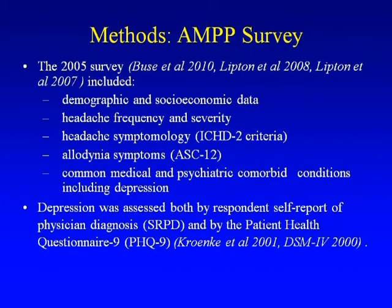The questionnaire is extensive — almost 17 pages — which makes it difficult to fill out, but it contains data on demographics, socioeconomic status, headache frequency and severity, headache symptoms, IHS criteria, allodynia symptoms using validated measures, and questions about psychiatric comorbid conditions.